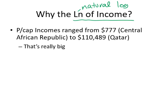First of all, doing natural log is going to make it look like this — it's going to slow it down, basically. So if we had here's the income, and then here is the log of income, it's going to go like that.